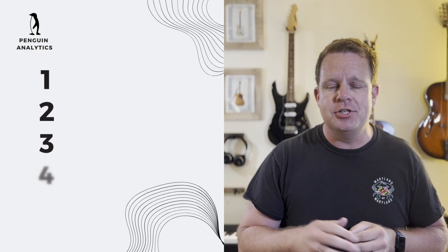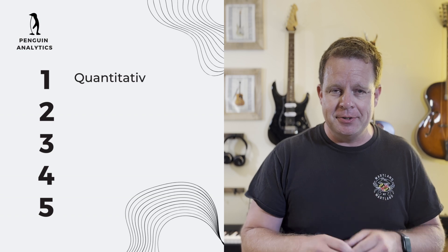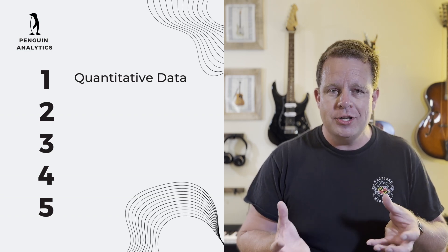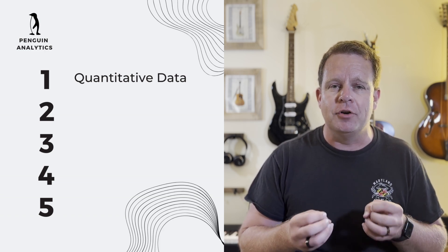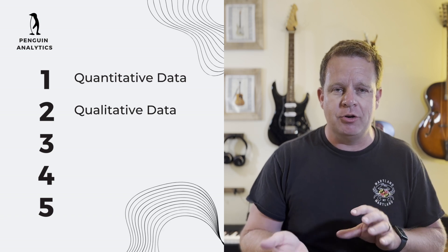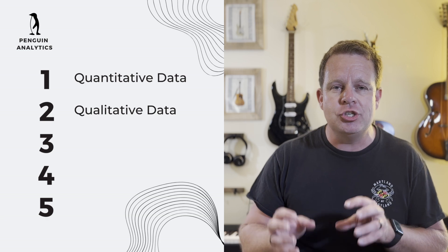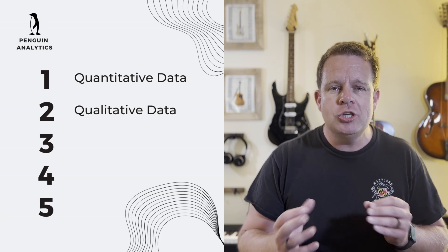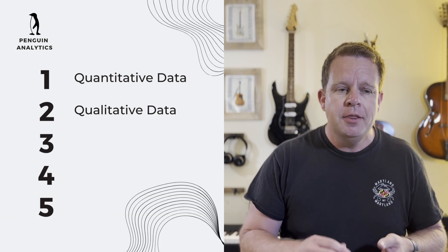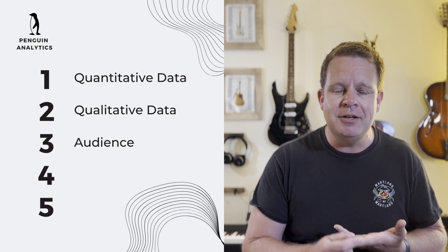We're going to take a five-step approach to building our story. The first step is to look at the quantitative data — the data in dashboards — and understand what the trends are. Once we have a good understanding of those trends, we're going to look for qualitative data on what might have been driving them: what was happening as the data was generated or over the time period we're looking at that might have caused the trends and changes we saw.